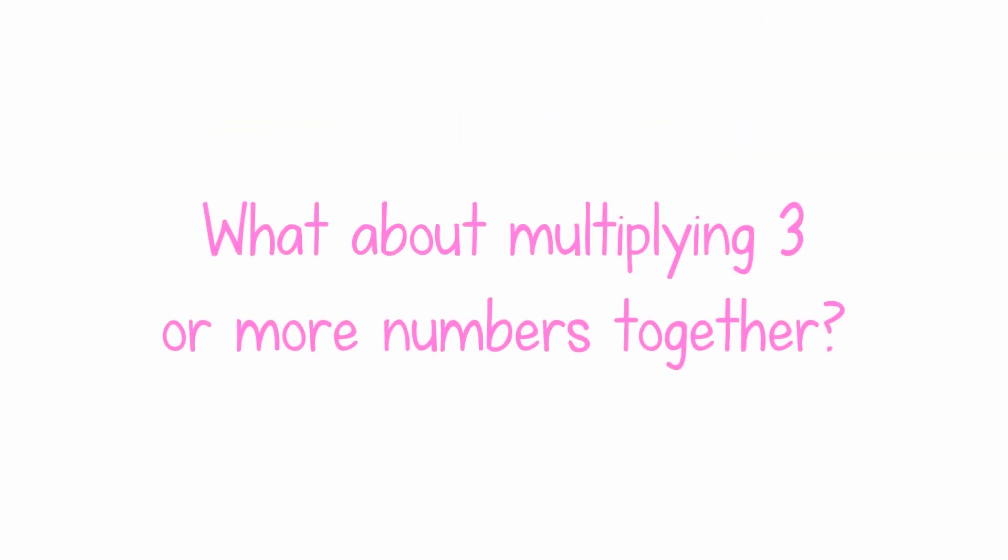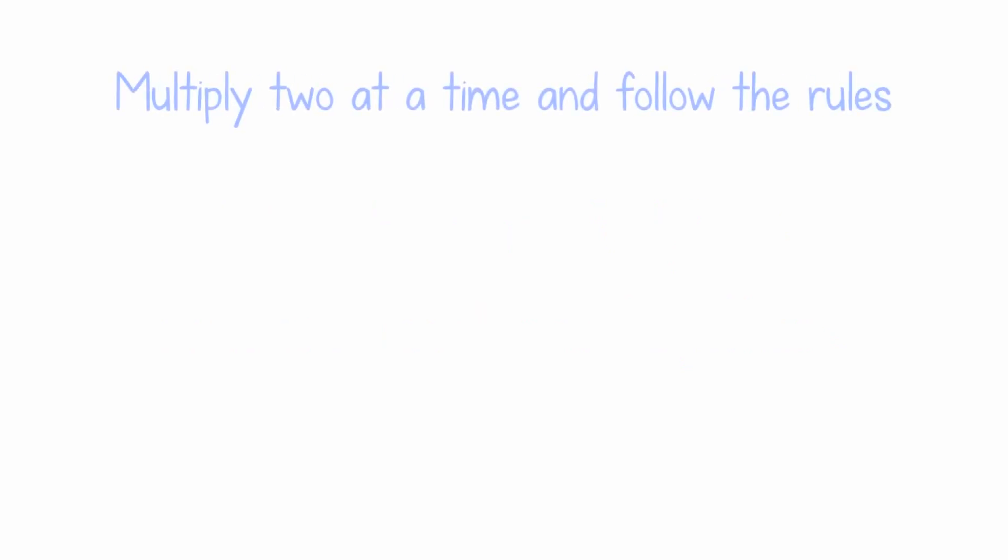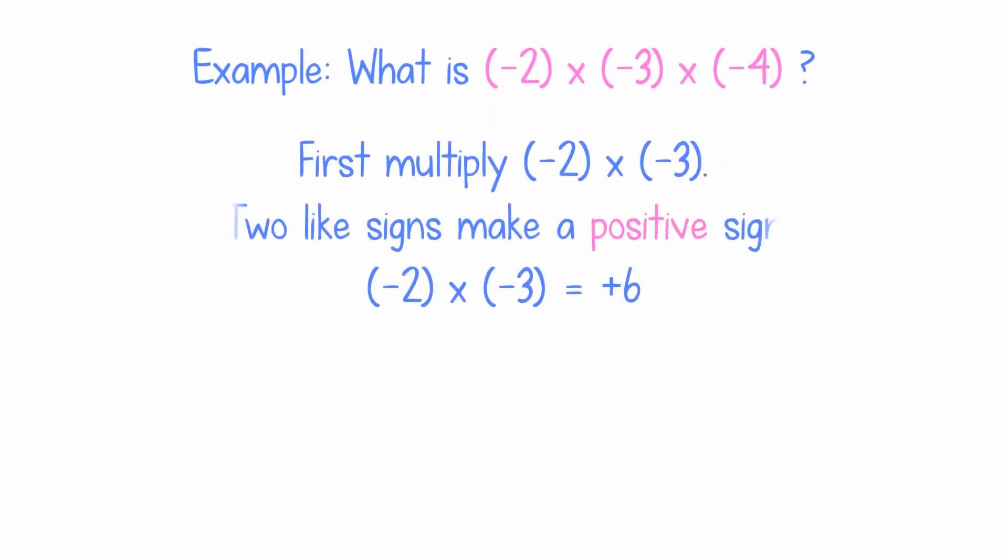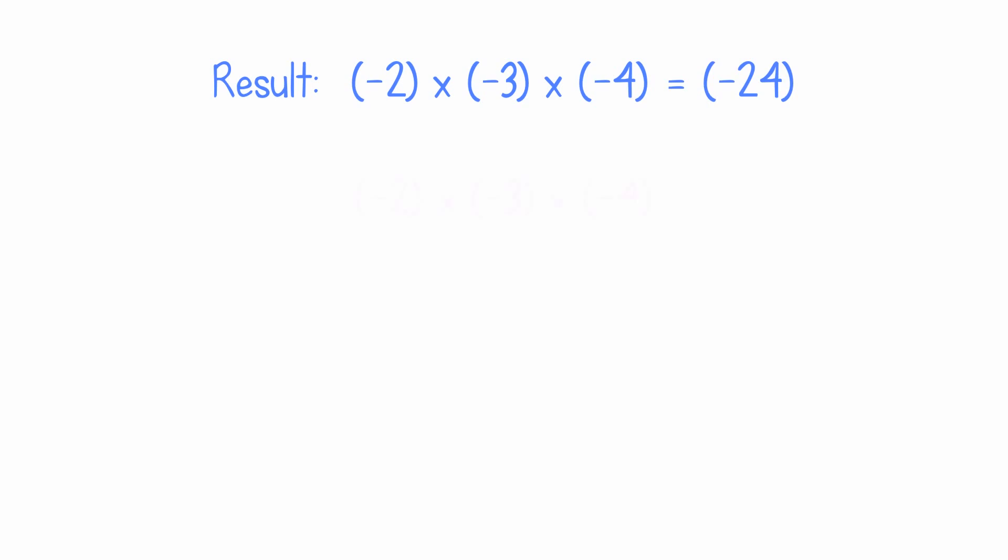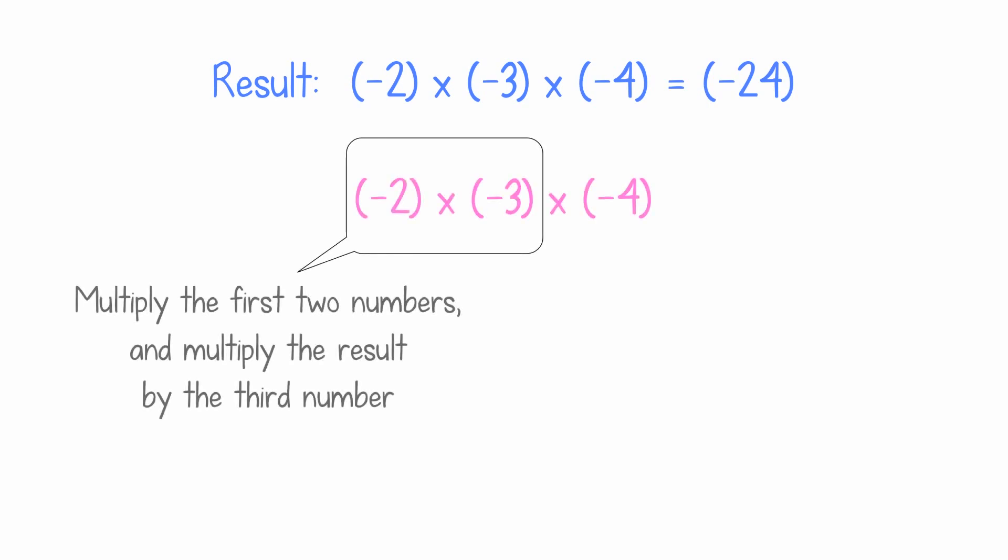What about multiplying three or more numbers together? Multiply two at a time and follow the rules. Don't forget two like signs always make a positive sign and two unlike signs always make a negative sign. So to multiply three or more numbers, multiply the first two, then multiply that result by the third number.